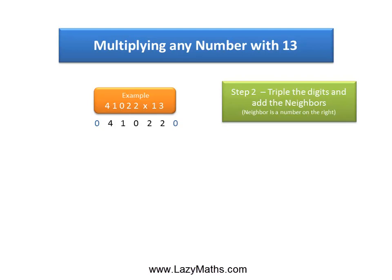The next step is to triple the digits and add the neighbor. The neighbor is a digit on the right side. And we'll do this process in pairs starting on the right side.